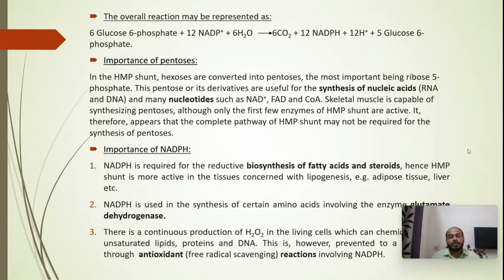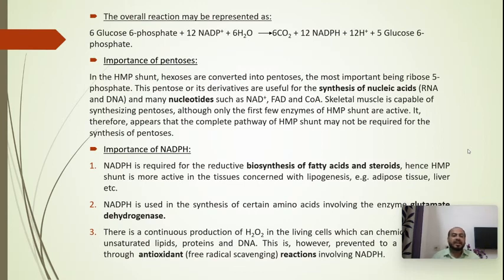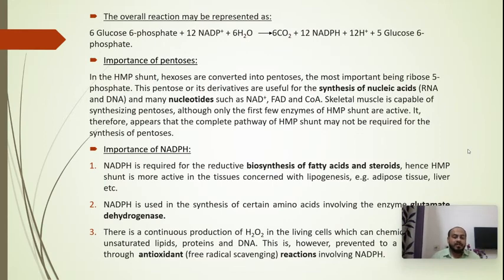The first important product is ribose-5-phosphate. In HMP shunt, hexoses are converted into pentoses. The most important pentose is ribose-5-phosphate, which is synthesized during the non-oxidative phase. This pentose is useful for the synthesis of nucleic acids such as RNA and DNA, and many other nucleotides like NAD+, FAD, and coenzyme A. It was observed that for the synthesis of these compounds, the entire HMP shunt is not required; only a few of the early enzymes are sufficient.